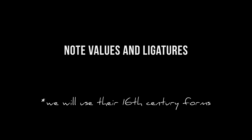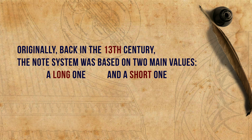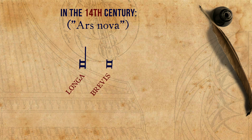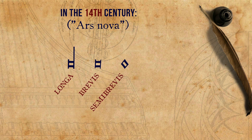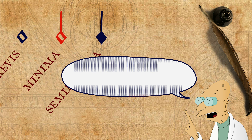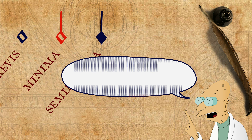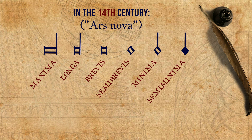To begin with, we must remind ourselves of the note values, their names and what they look like. We will use their 16th century forms. Originally, back in the 13th century, the note system was based on two main values, a long one and a short one — or in Latin, a longa and a brevis. In the 14th century, in the period often referred to as Ars Nova, further values were regularly used. Shorter than the brevis was the semi-brevis; even shorter, the minima; and even shorter, the semi-minima.